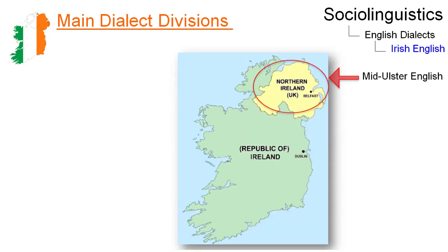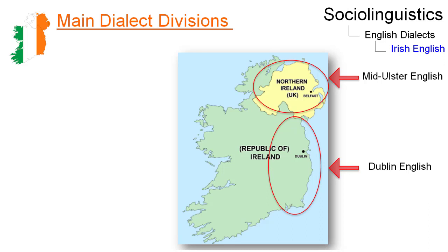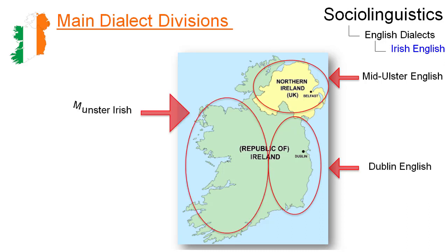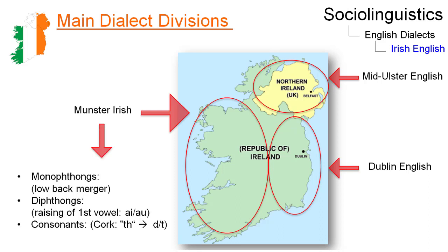Mid-Ulster English, spoken in the province of Ulster in Northern Ireland, is mostly influenced by the Ulster Scots and the Scots language. Dublin English collectively refers to the Irish English varieties of Eastern Ireland. The dialect spoken in the south and southwest of Ireland is also called Munster Irish and considerably differs from the other two dialects.